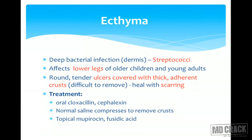The next infection is ecthyma. As compared to impetigo, ecthyma is a deep bacterial infection involving the dermis, caused by streptococci. The site commonly involved is the lower legs of older children and younger adults. The patient presents with round, tender ulcers covered with thick dark brown adherent crusts that are difficult to remove. Being a deeper infection, it heals with scarring. Treatment includes oral cloxacillin and cefalexin. The thick adherent crust must be removed by softening with normal saline compresses, followed by topical mupirocin and fusidic acid.